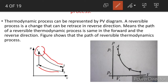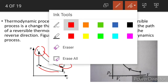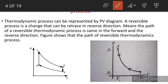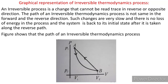In this figure, a system undergoes a change from state one to state two. During a reversible process, all the changes in state that occur in the system are in thermodynamic equilibrium with each other, so the reversible process is also an ideal process.